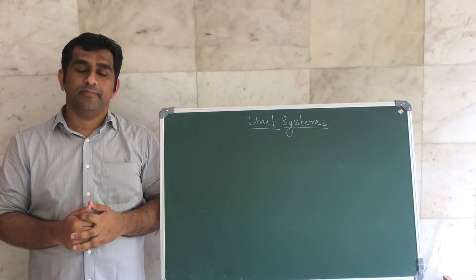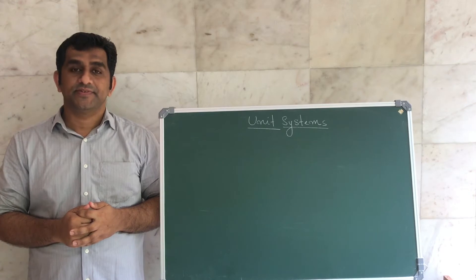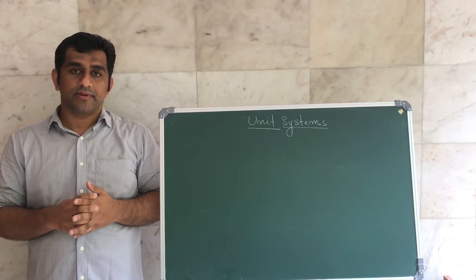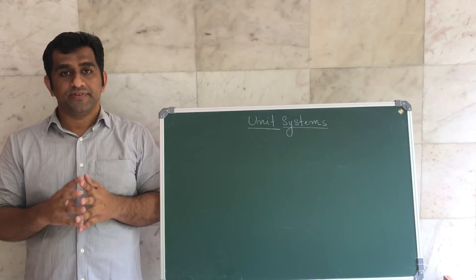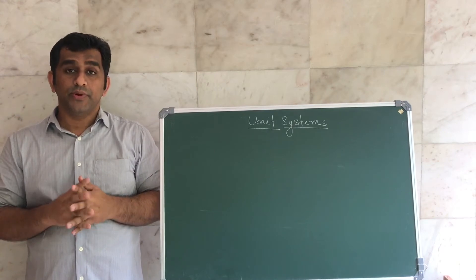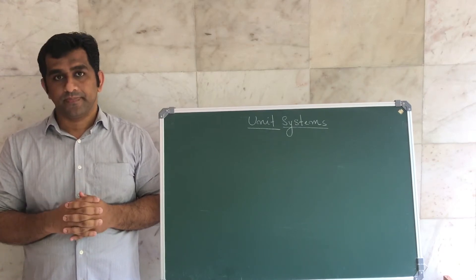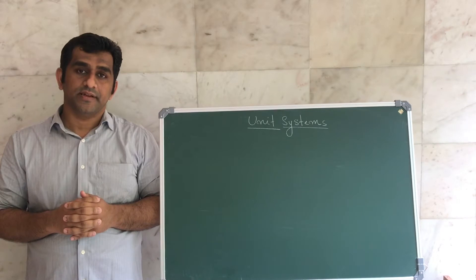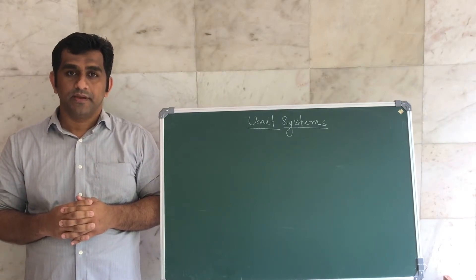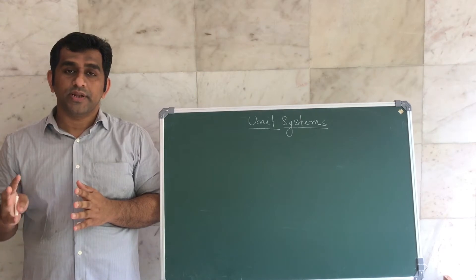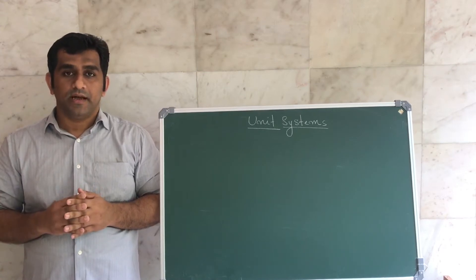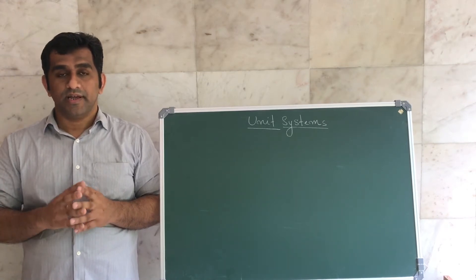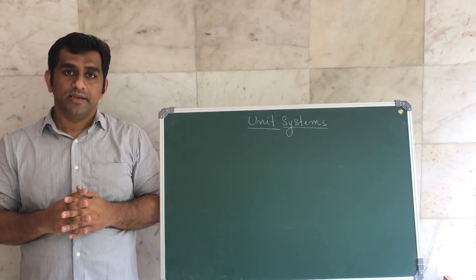Hi students, welcome back to Mr. Physics Tutorial. Plus one physics — units and measurement chapter. In this class we discuss physical quantities. There are two types of physical quantities: fundamental quantities and derived quantities. Fundamental quantities have fundamental units, and derived quantities have derived units.